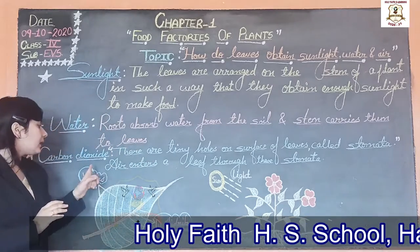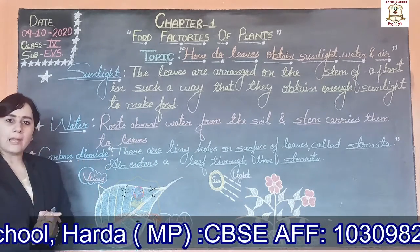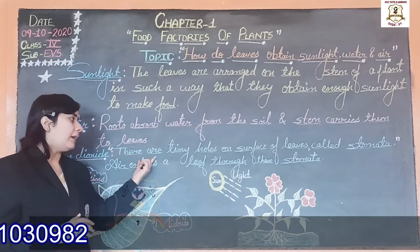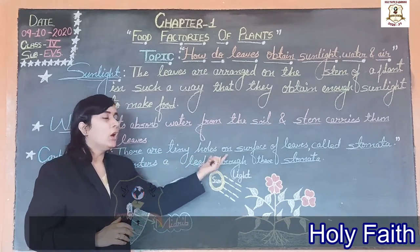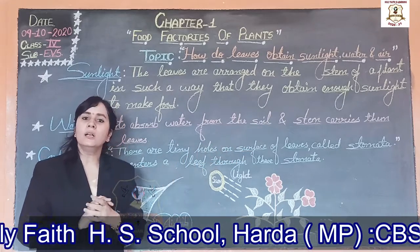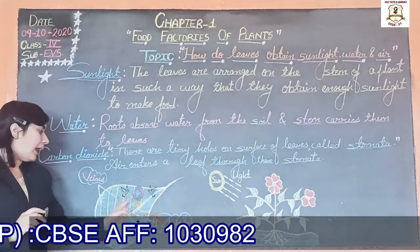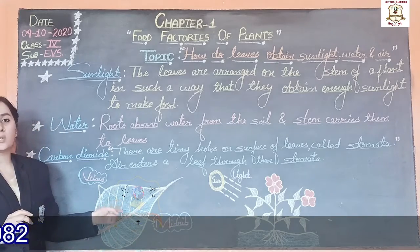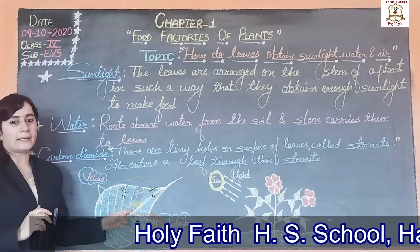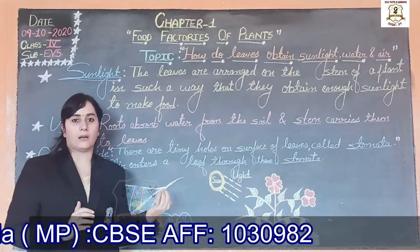Now next is carbon dioxide. How do leaves get carbon dioxide? There are tiny holes on the surface of leaves called stomata, and air enters through these stomata.